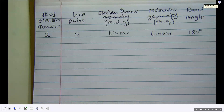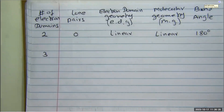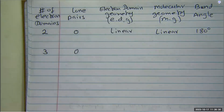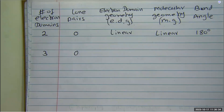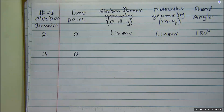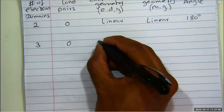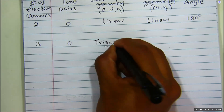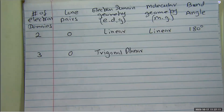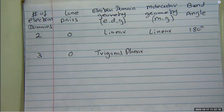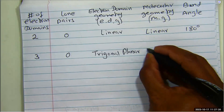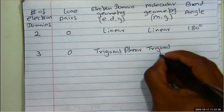Let's say that we have three electron domains, zero lone pairs. Again, electron domains are like balloons. If you hold three fully blown balloons in your hand — trying to decorate something for Thanksgiving — how would they look? A triangle. And also that triangle will be on a plane, so it's called a trigonal planar geometry. The three balloons make a triangular shape, and it is on a plane. Therefore that is called trigonal planar, and because there are no lone pairs, the molecular geometry is also trigonal planar.